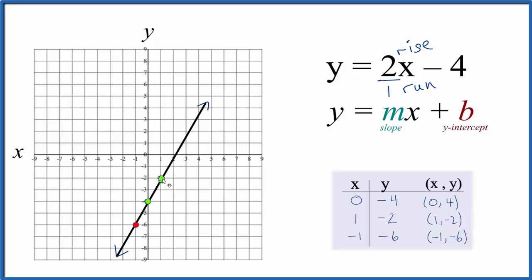We can just keep doing this, up 1, 2, over 1, up 1, 2, over 1, and these points are on our graph. Likewise, we could go down 2 and in the opposite direction, go down 2, over 1 in the opposite direction, and they're on our line as well.